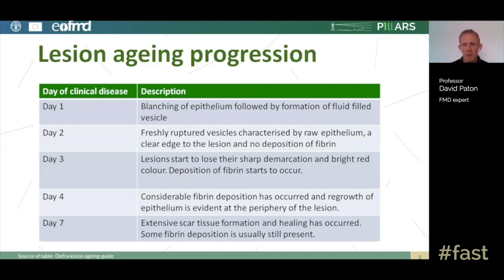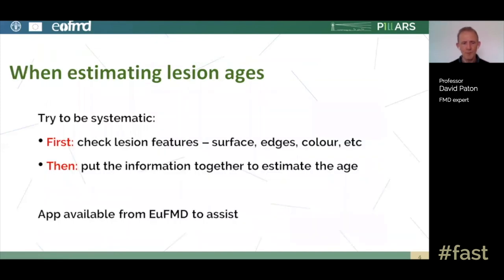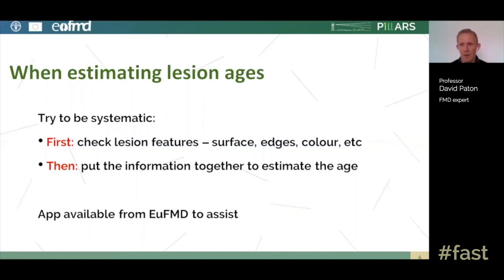Let's look at some pictures and illustrations, but before that, a general caveat about how you approach lesion aging. It's a good idea to be systematic. People sometimes take a quick look at a lesion, see one or two features, and immediately guess the lesion age. It's better to do it in a systematic way — really check all the different lesion features against a mental checklist: look at the surface, the color, the edges, and so on — and only then put the information together to estimate the age. Don't jump to conclusions on first impressions.